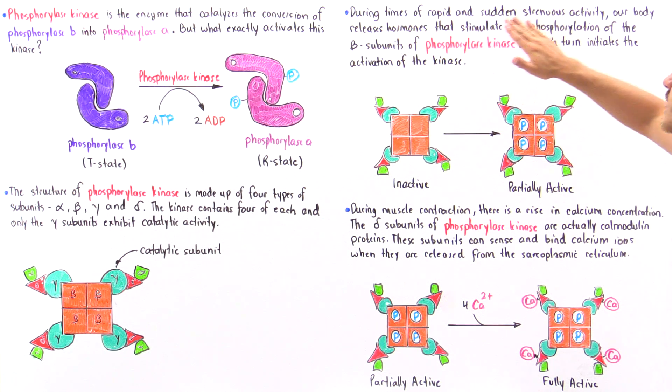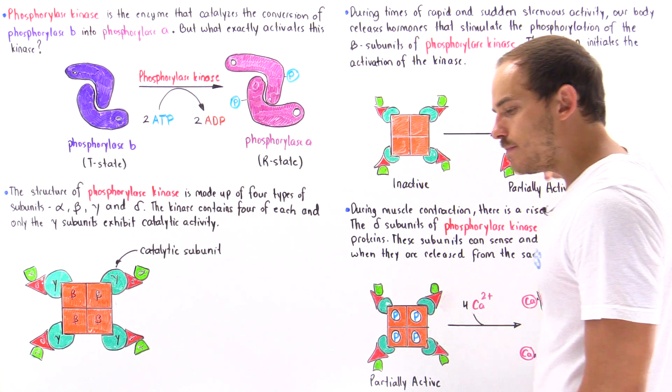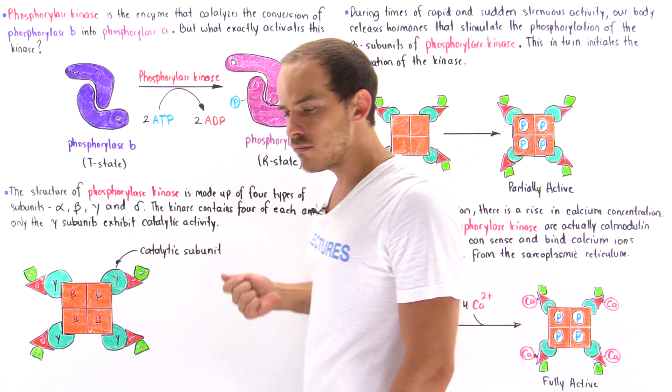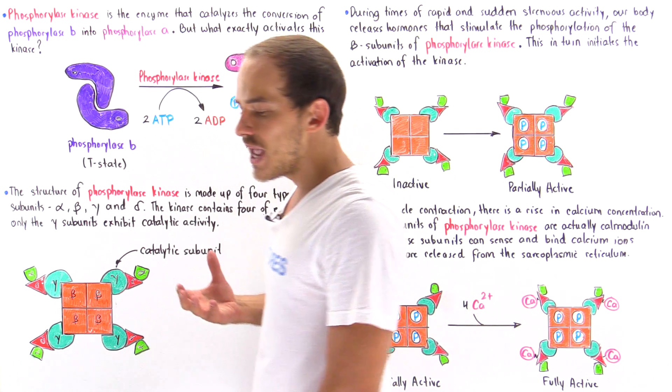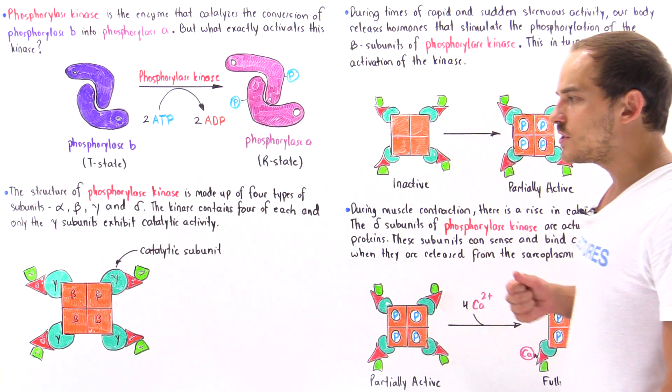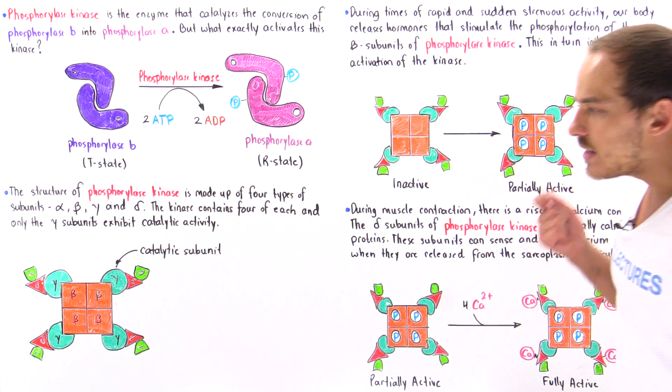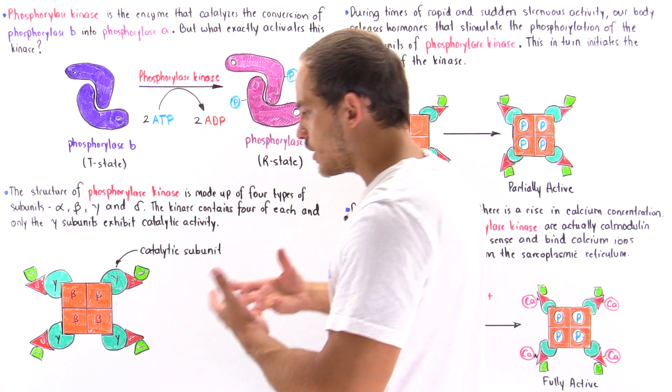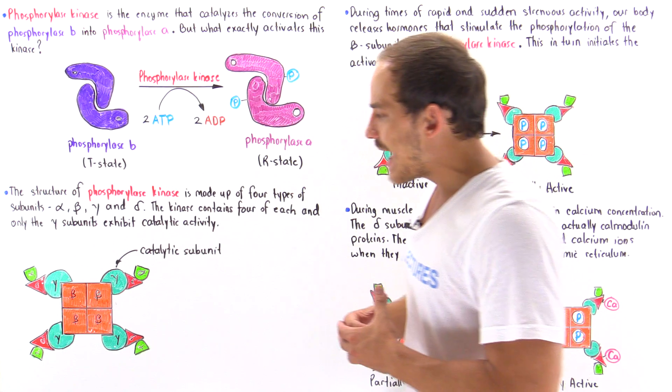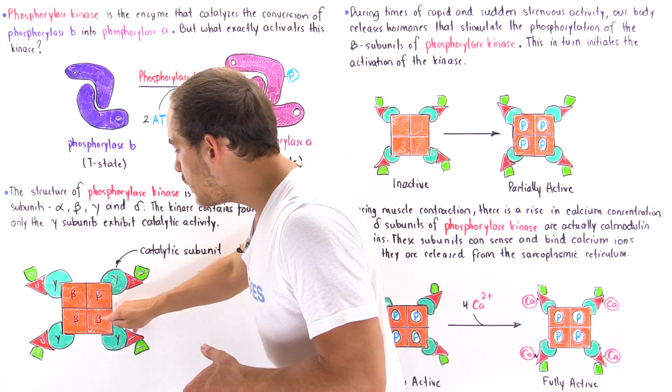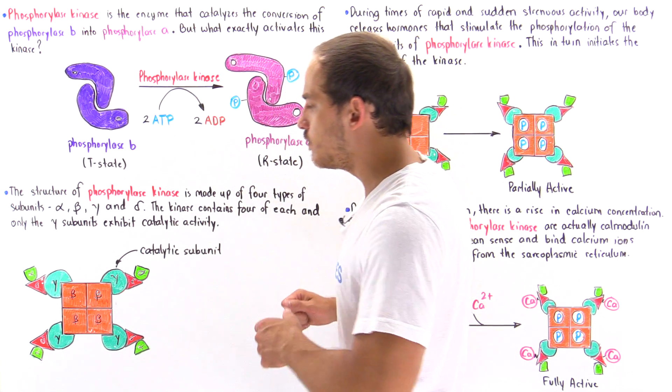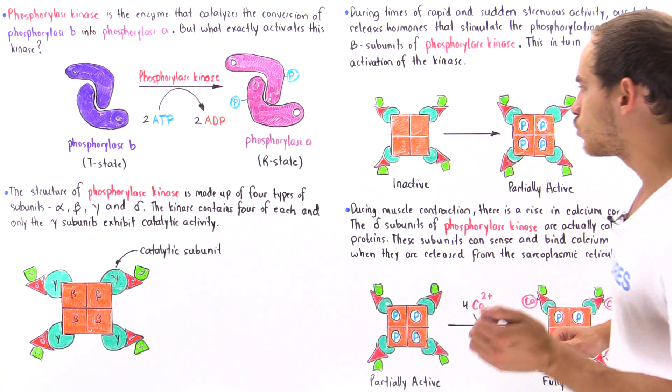So during times of rapid and sudden strenuous activity, we know that our body begins producing and releasing hormones into our bloodstream. And what these hormones ultimately do is they allow our body, they allow the cells of our body to actually activate these beta subunits, and they activate the beta subunits by attaching phosphoryl groups.